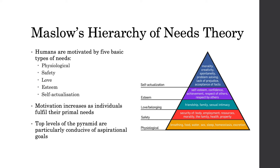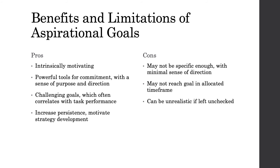Maslow's hierarchy of needs theory states that humans are motivated by five basic types of needs: physiological, safety, love, esteem and self-actualisation. Particularly, esteem and self-actualisation motivate an individual with personal growth, something aspirations are closely tied with. Aspirational goals may include things such as career progression, recognition, status and financial freedom, all of which are conducive with the top two levels of Maslow's Pyramid.